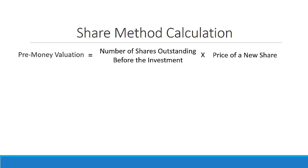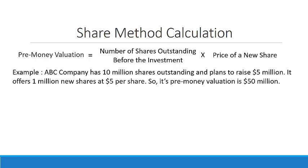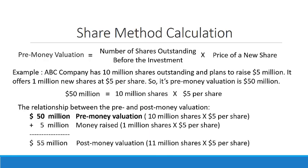Let's apply this in an example. ABC Company has 10 million shares outstanding and plans to raise $5 million. It offers 1 million new shares at $5 per share. So its pre-money valuation is $50 million. Here's the relationship between the pre and post-money valuation: $50 million is the pre-money valuation, $5 million is the money raised, and $55 million is the post-money valuation.